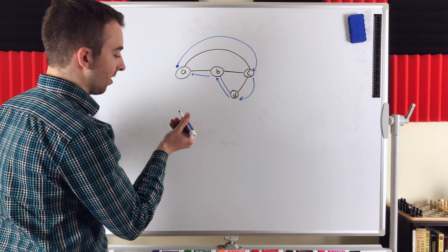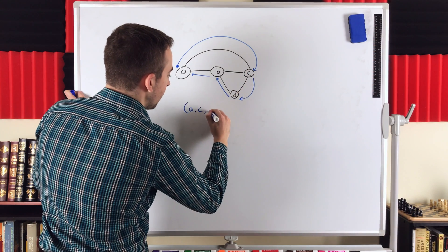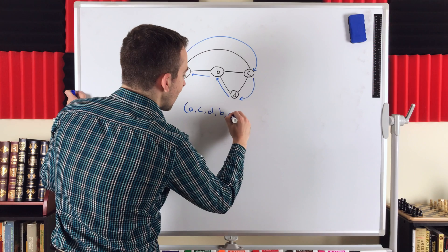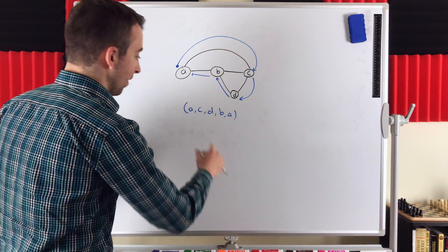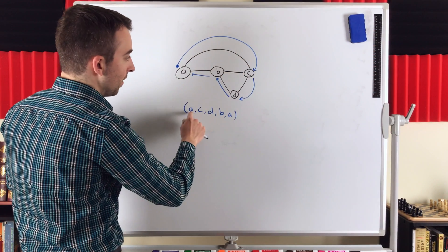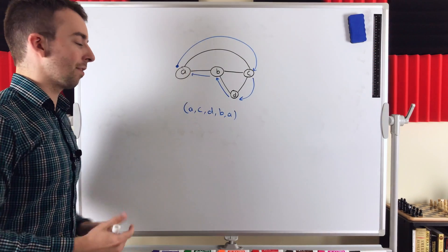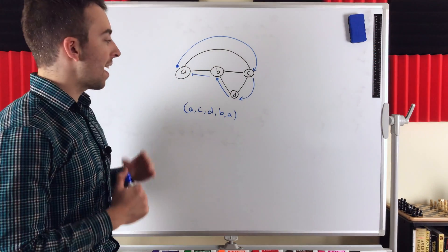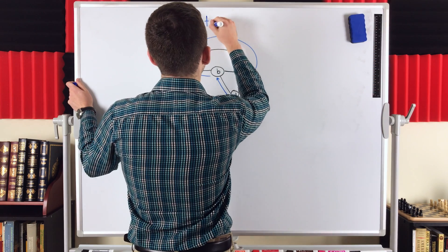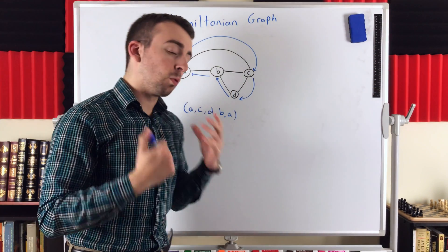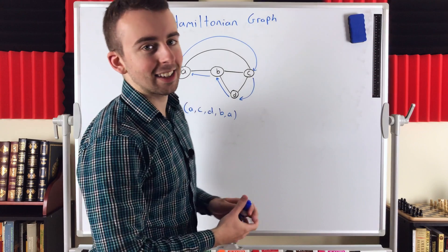Let's write out this Hamiltonian cycle as a sequence of vertices. We start at A, then go to C, then D, then B, and then return to A where we started. For a cycle to be Hamiltonian, the sequence has to contain every vertex of the graph — A, C, D, B, and back to A. We've got every vertex in that Hamiltonian cycle. If a graph has a Hamiltonian cycle, we call it a Hamiltonian graph, or simply a Hamilton graph. To prove a graph is Hamiltonian, you have to prove it has a Hamiltonian cycle containing every vertex.